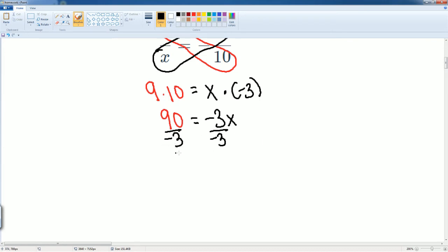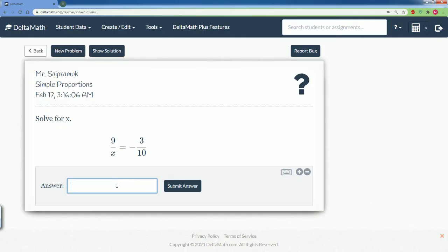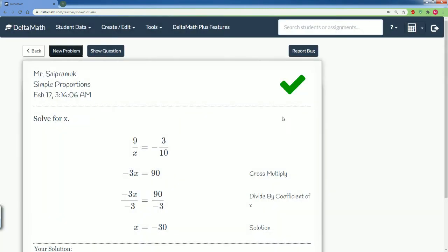To solve for x, we divide by negative 3, which is the coefficient in front. So divide negative 3 on both sides. 90 divided by negative 3 gets you negative 30. Let's check our work. Negative 30, submit.